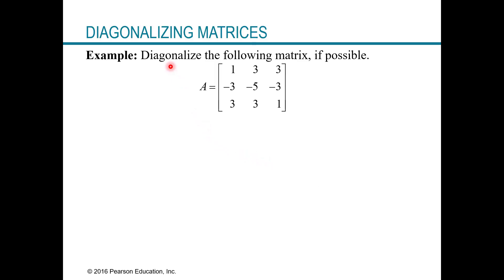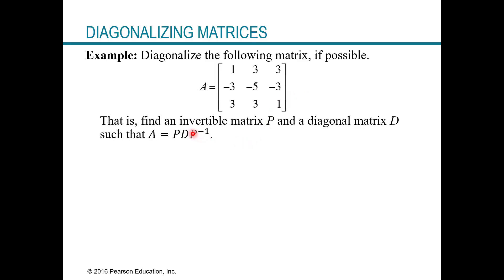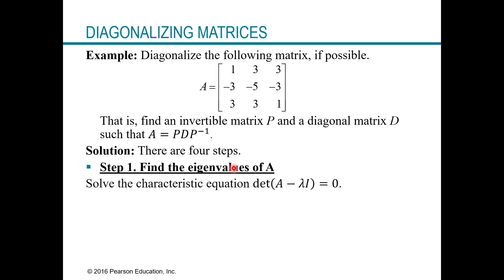Let's diagonalize the following matrix if possible. That means we need to find an invertible matrix P and a diagonal matrix D such that A equals P times D times P inverse. We'll break this into four steps. Step one is to find the eigenvalues of A by solving the characteristic equation: the determinant of A minus lambda I equals zero.